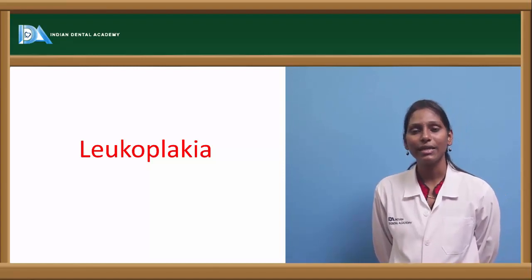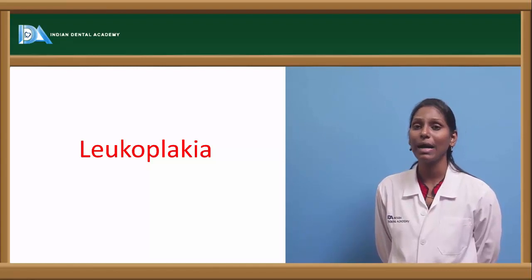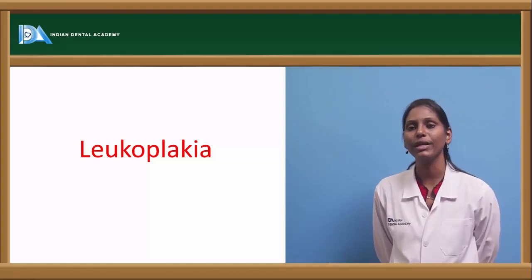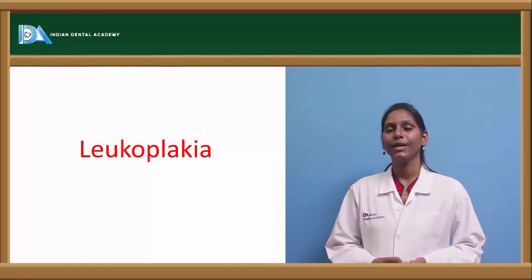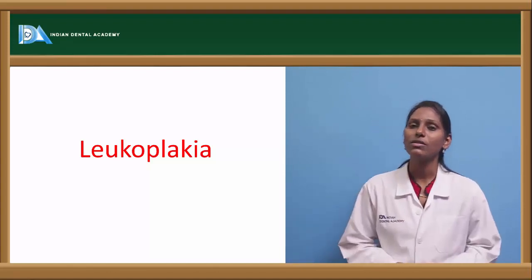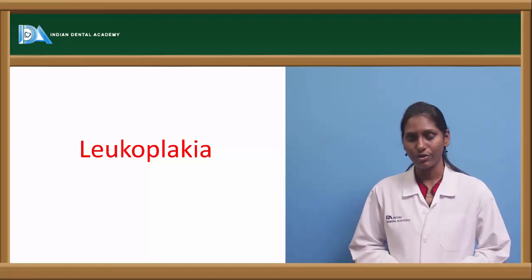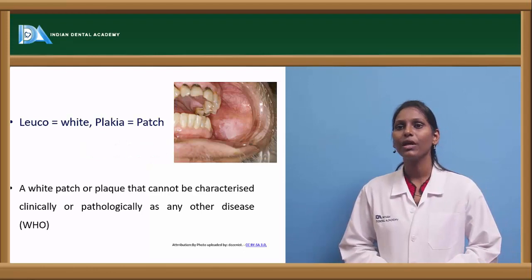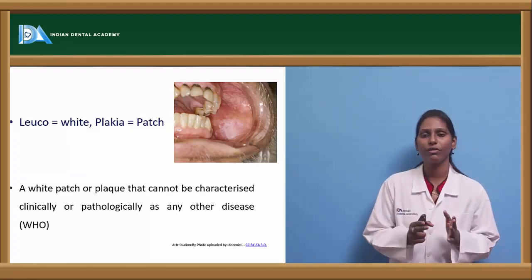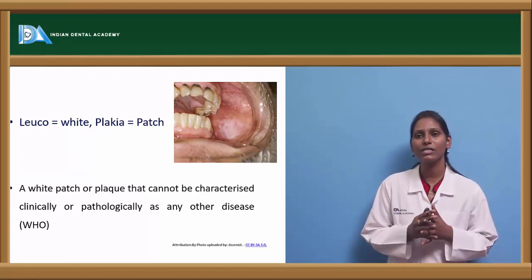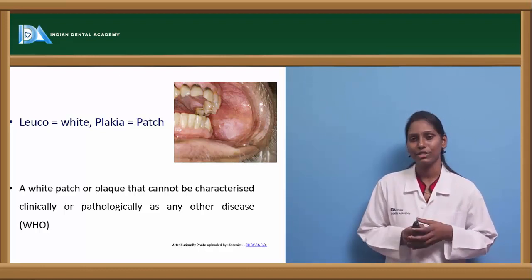Leukoplakia is a habit-associated disorder, most commonly associated with tobacco chewing or smoking. Now we will go in detail about leukoplakia, its clinical features and how we actually have to manage it. The word leukoplakia itself is derived from a Greek word — leuko means white and plakia means patch.